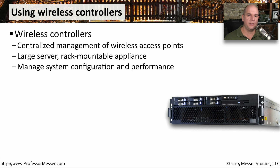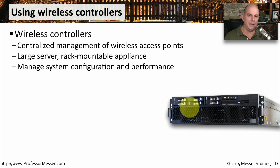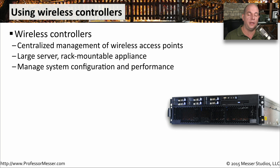As we start to deploy more and more access points, it becomes more and more difficult to manage and control all of these different devices. At that point, you might want to consider using a wireless controller. This is a centralized management console — a single front end that you can use to manage all of those individual access points. So instead of connecting to each access point individually, you simply go to one single console. These are usually rack-mountable appliances, one or two U in size. You slide it into the rack, give it an IP address, and now you're able to use the functionality of this management console. From one central place, you can view all of your access points, view performance information, and if you need to make a configuration change, you make it in one place and push that configuration out to all of your different access points.